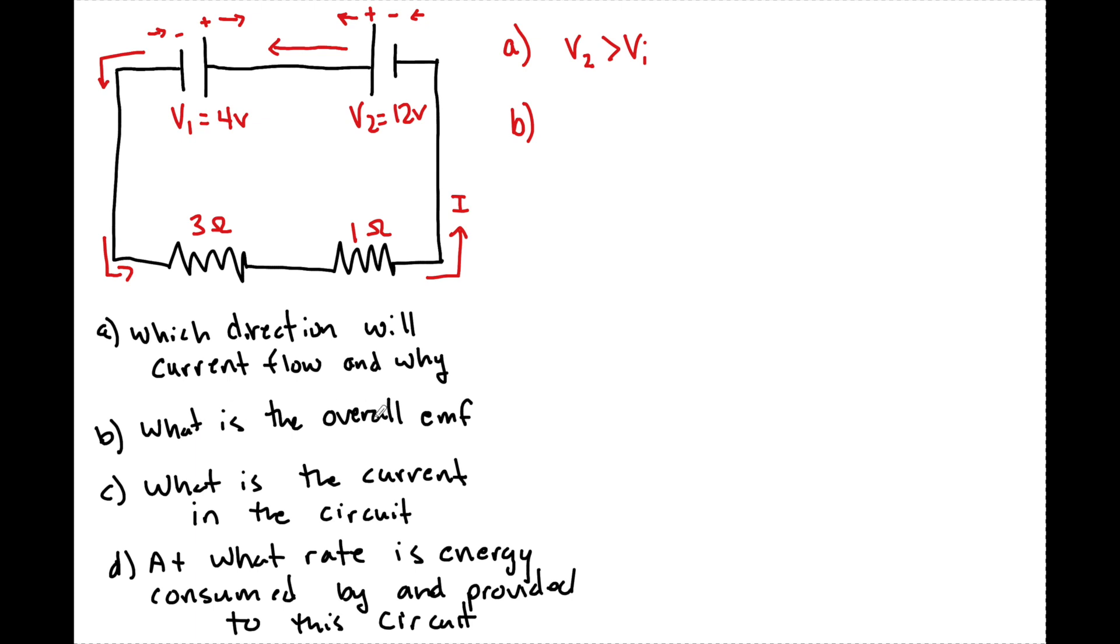In part B, they ask what is the overall EMF, electromotive force, saying what's the overall voltage of this circuit going to be? And we know since V2 is going to win, we're going to have V2, and that's going to gain potential difference, and then it's going to lose it when it goes across here. That's going to be our overall potential difference of the circuit or EMF. So we have 12 volts here minus 4 volts. So that means the overall EMF of this entire system is going to be 8 volts.